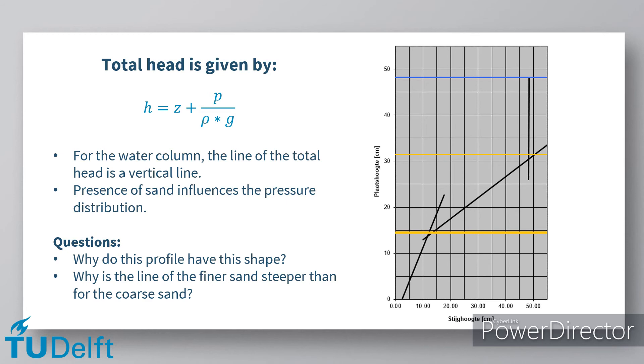For the sand layer, the slope of the black line changes. This implies that the presence of the sand has an influence on the pressure head. The students must be able to reason why the profile of the total head has this shape, and why the profile of the total head is steeper for the finer sand than for the coarse sand.